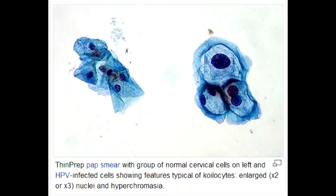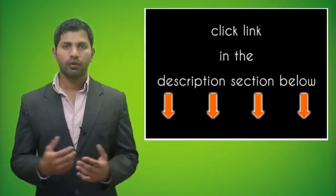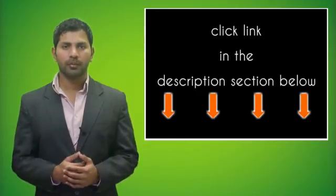Coilocytes occur as a result of infection of the cells by human papillomavirus, or HPV, and this can eventually lead to cervical cancer.